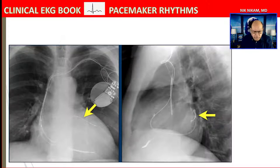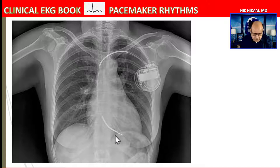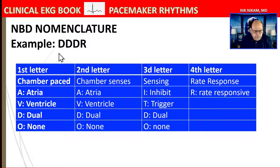Here is a single chamber pacemaker with only one electrode. The thick bands represent that this is a single chamber ICD, or intracardiac defibrillator. Pacemakers use an NBD nomenclature with four letters, and sometimes a fifth.